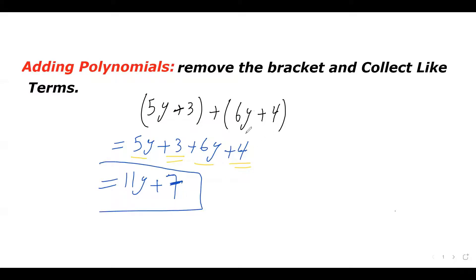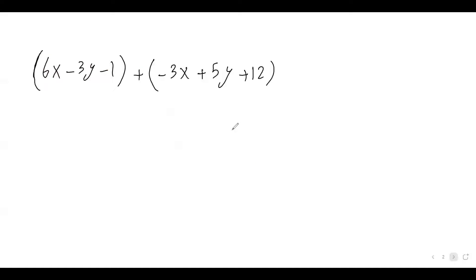This is our simplified form of this expression — we added the two polynomials and got this answer. Let's do another one. 6x minus 3y minus 1, that's our first polynomial, plus bracket negative 3x plus 5y plus 12. So the first thing we need to do is to remove that bracket.